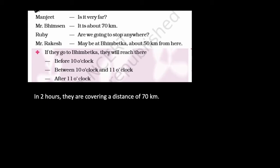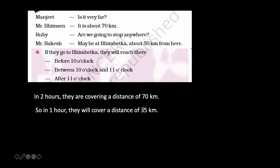In two hours they cover 70 km. If I reduce the time by half — to one hour — the distance also reduces to half, which is 35 km. Bheembetka is 50 km away, which is more than 35 and less than 70, so it is in between. The first option, 'before 10 o'clock,' means within one hour, but in one hour they only cover 35 km, which is less than 50 km. So this option is wrong.